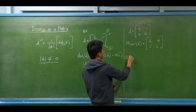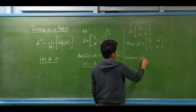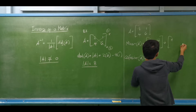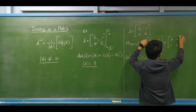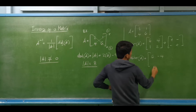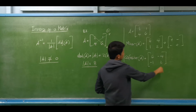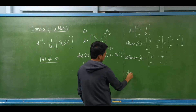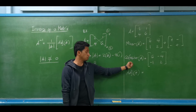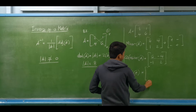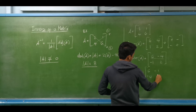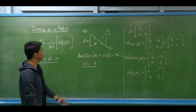Next we form the cofactor matrix by applying the alternating sign pattern to each minor. The sign pattern for a 2 by 2 is: positive, negative, negative, positive. So the cofactor matrix of matrix A is: positive 6, negative 4, negative 1, positive 2. The adjoint of matrix A is the transpose of the cofactor matrix — we convert each row into a column. So the adjoint has first row becoming first column, and second row becoming second column.